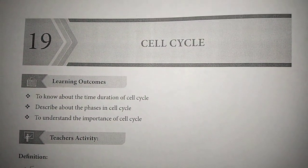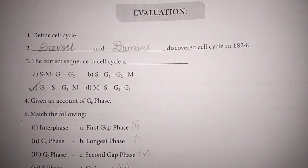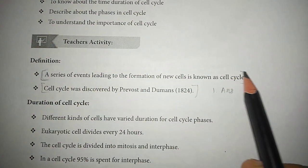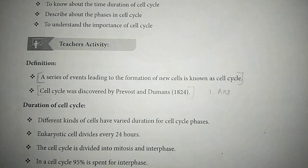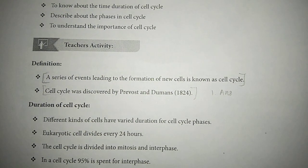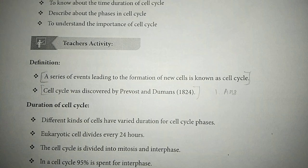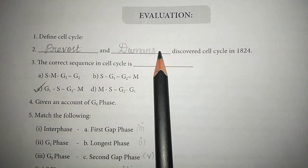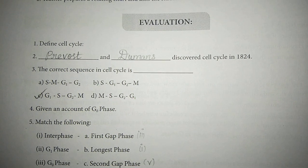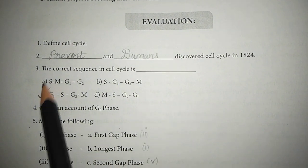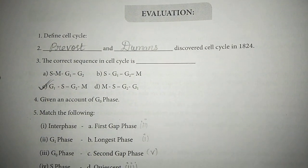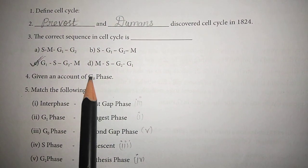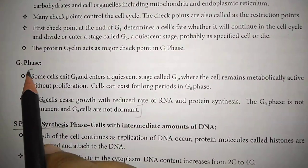19th lesson, cell cycle. First one: define cell cycle. Fourth one: give an account of G0 phase. This is the answer.